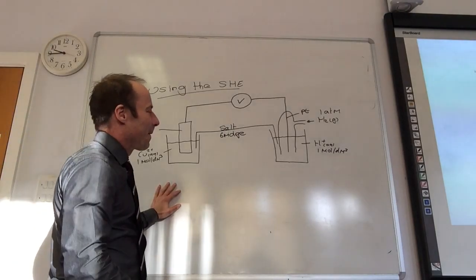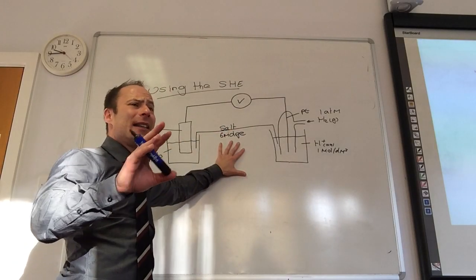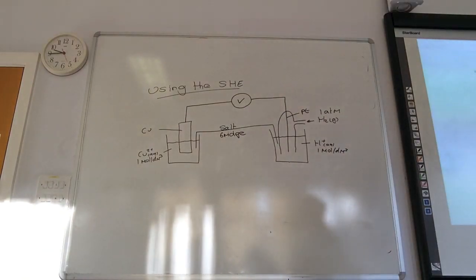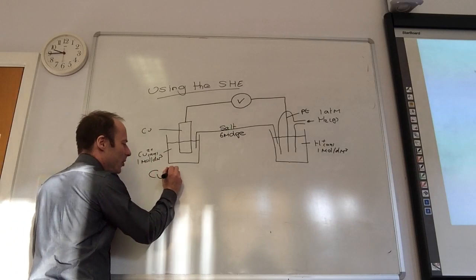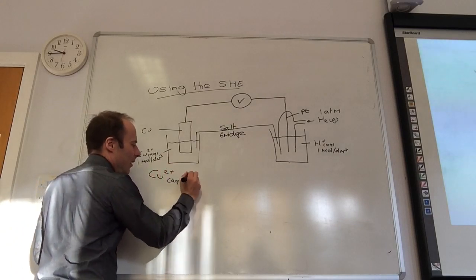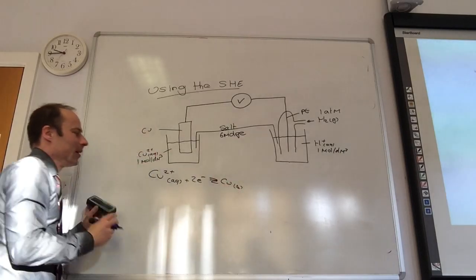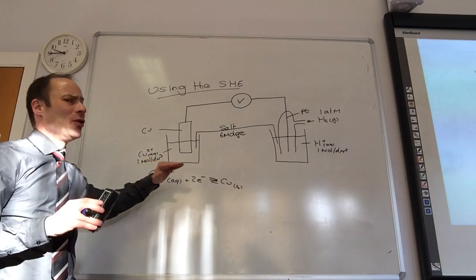So if I wanted to change this and I now wanted to measure... this would measure this equilibrium: Cu²⁺(aq) + 2e⁻ ⇌ Cu(s). That would be measuring that one, so that would give me the voltage due to that.